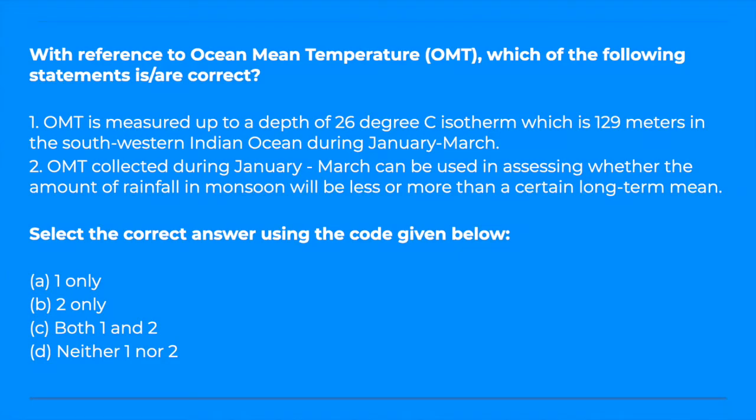The question is: with reference to ocean mean temperature, which of the following statements is correct? Statement 1: OMT is measured up to a depth of 26 degree centigrade isotherm, which is 129 meters in the southwestern Indian Ocean during January-March. Statement 2: OMT collected during January-March can be used in assessing whether the amount of rainfall in monsoon will be less or more than a certain long-term mean.